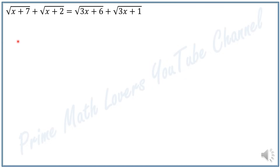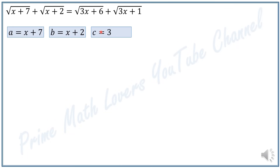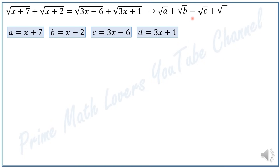The first thing I do is use the changing variable technique and define four new variables. I let a = x + 7, b = x + 2, c = 3x + 6, and d = 3x + 1. So we have square root of a plus square root of b is equal to square root of c plus square root of d.